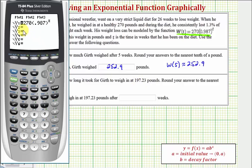In Y2, we're going to enter the constant function W(t) equals 197.23, or in the calculator, Y2 equals 197.23. And now we're going to find the point of intersection of these two functions to determine how long it took for Girth to weigh this amount.